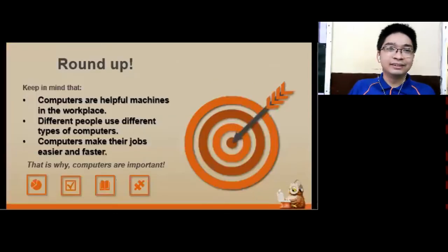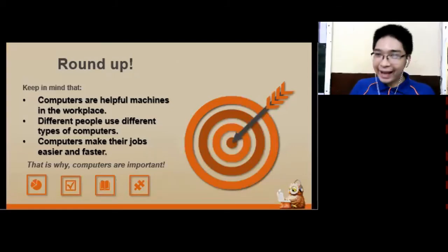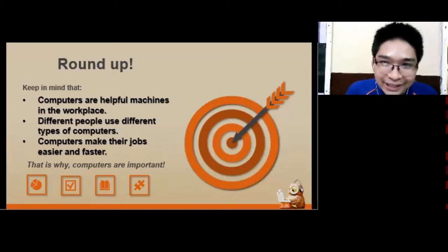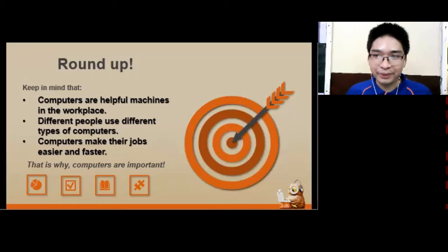Alright, so to sum it all, let's keep in mind that computers are helpful machines in the workplace. Different people use different types of computers, and lastly, computers make their jobs easier and faster. That's why computers are very important. There are a lot more people who are using computers to make their work more efficient and easier. That's why computers are very important. They are now part of our daily life.